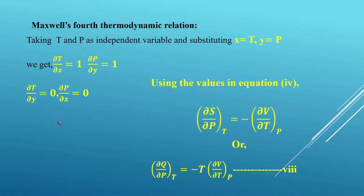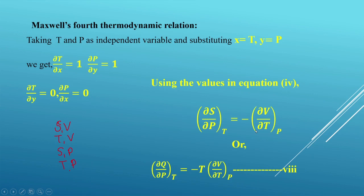To remember the four Maxwell relations: the first uses the pair S, v; the second uses T, v; the third uses S, p; and the fourth uses T, p — that is S-v, T-v, S-p, T-p. The cross multiplication of variables in the partial derivatives always gives the form T·S = p·v, which has the dimensions of energy. The sign is positive when T appears with p, and negative otherwise.